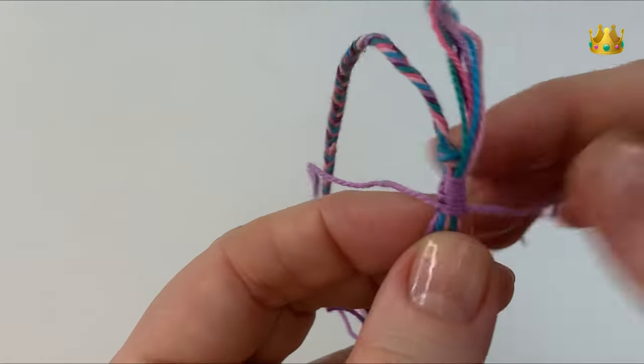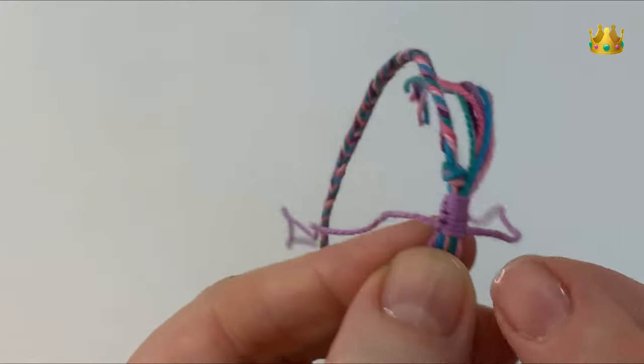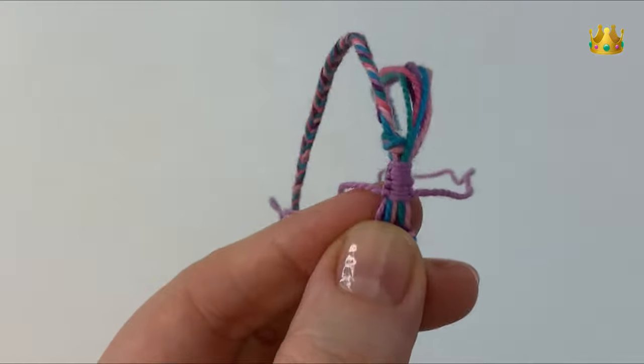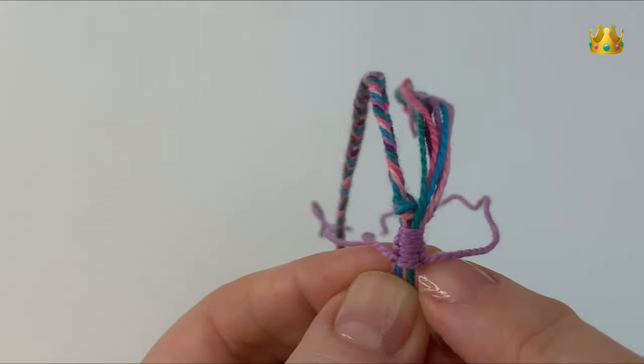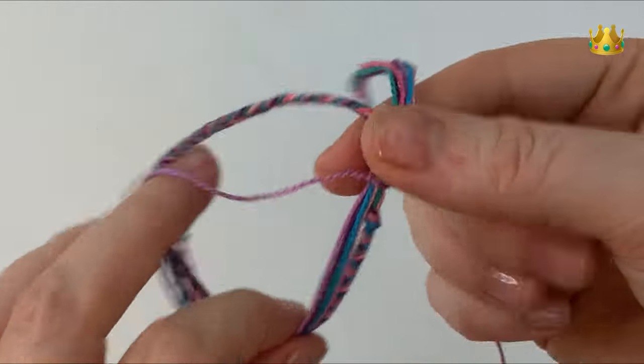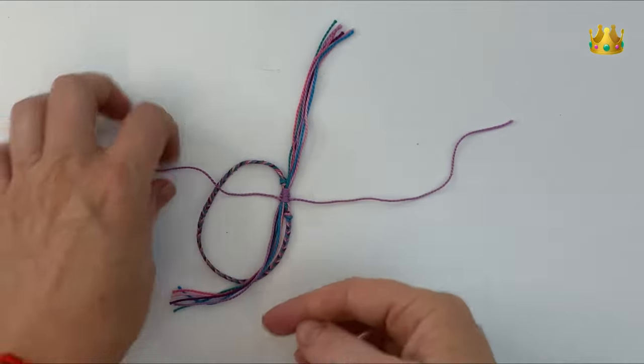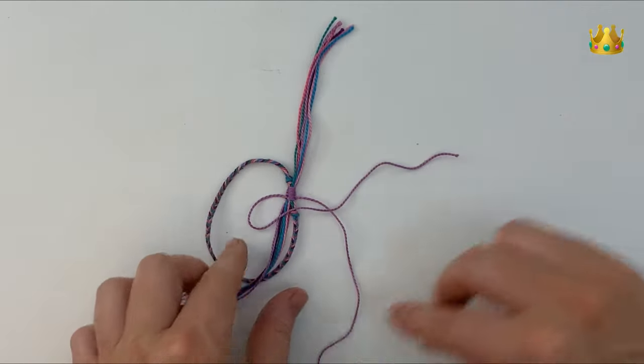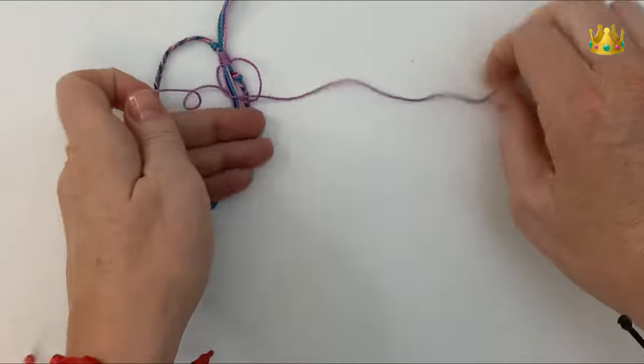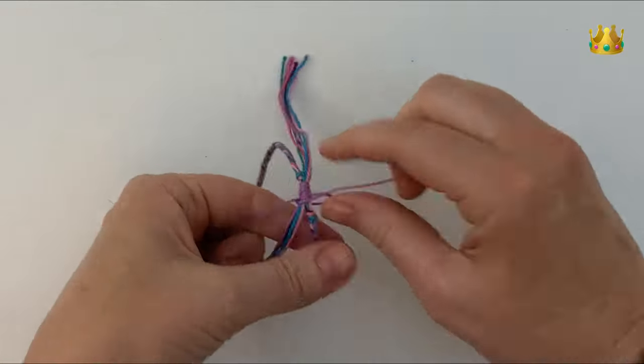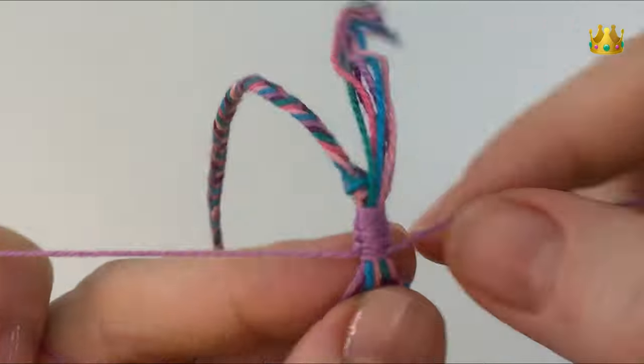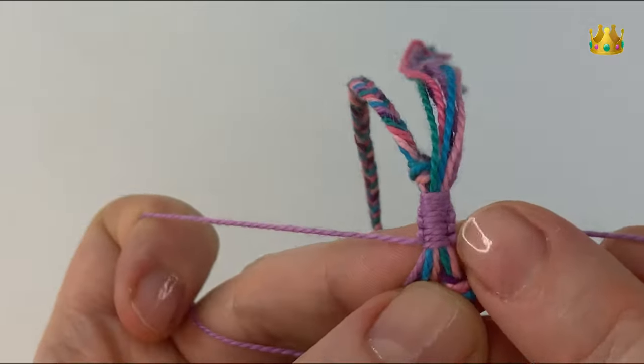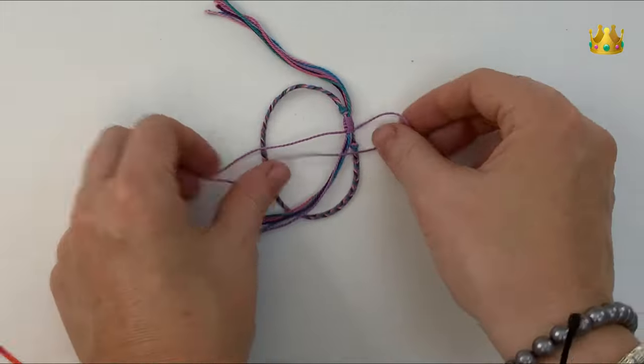If you're ever wondering which stitch you're up to, you can see on the last stitch you did there's a little part of the stitch going vertical. On this one here it's on the left side, that means we're onto the left side stitch. This next stitch you can see that little vertical part is on the right hand side, that means we're up to the right side stitch.